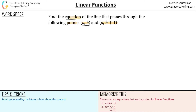Anytime you have two points, you know an x₁ and a y₁ and an x₂ and a y₂, because coordinates are always written x comma y. So let's call (a, b) our first point — x₁, y₁ — and (a, b+1) our second point — x₂, y₂.